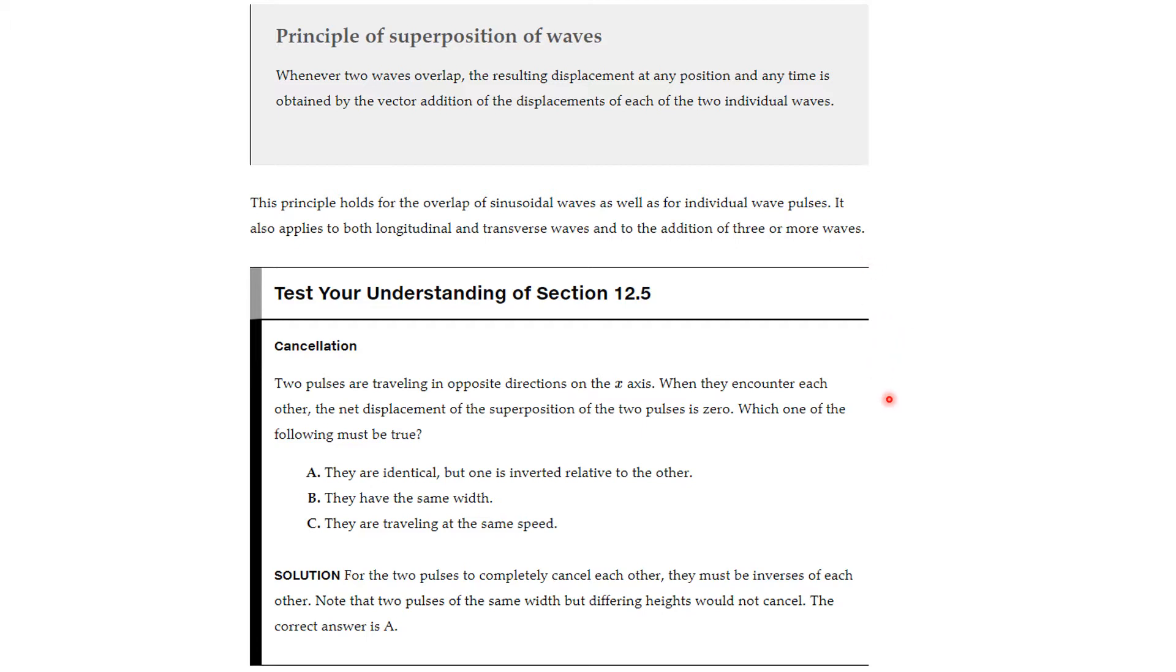Here's a test of our understanding. Two waves are traveling in opposite directions on the x-axis. They encounter each other, and the net displacement of the superposition is zero. Which must be true? They're identical but one is inverted relative to the other, they have the same width, or they're traveling at the same speed. The answer is A: for the two pulses to completely cancel each other, they must be inverses of each other. Note that two pulses of the same width but differing heights would not cancel.